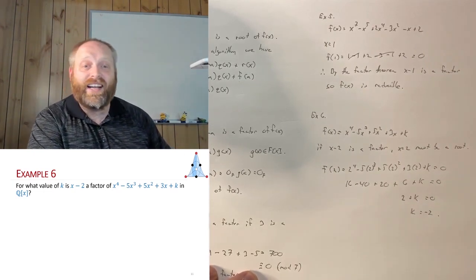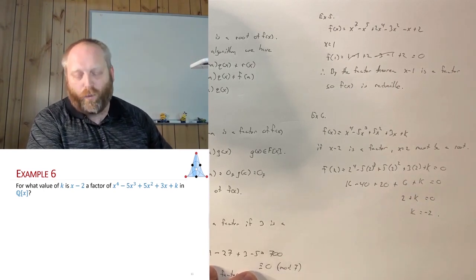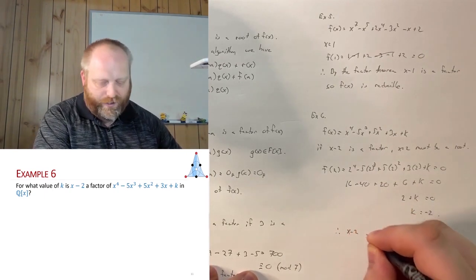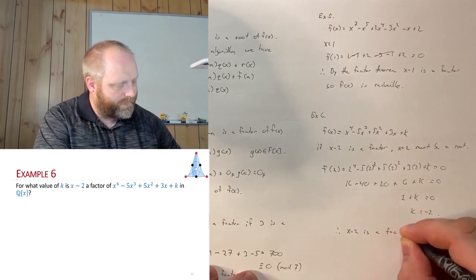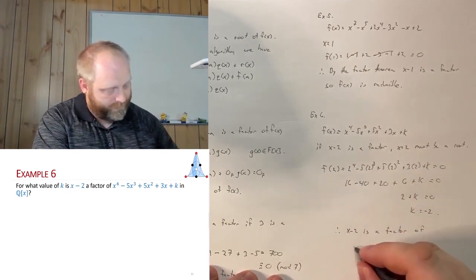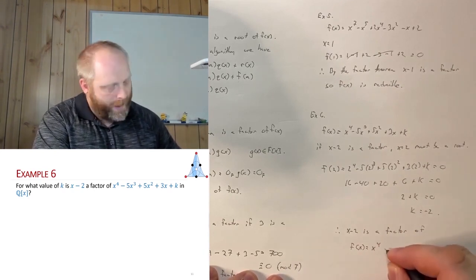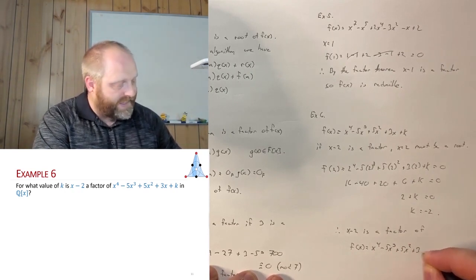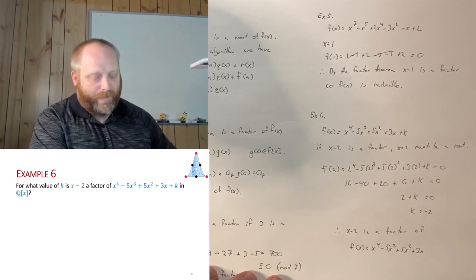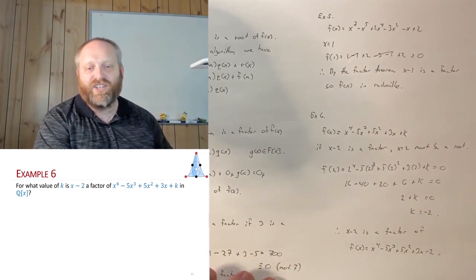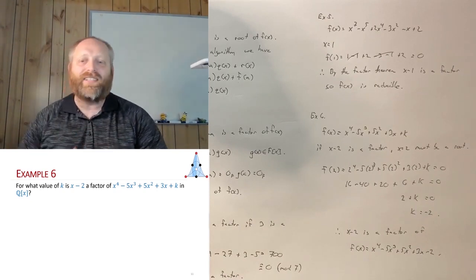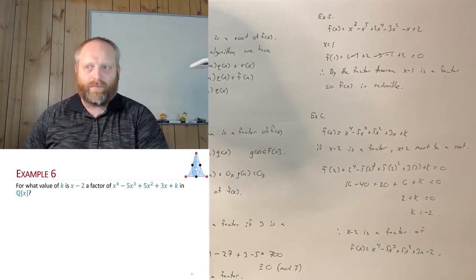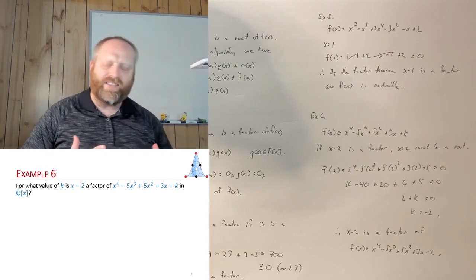When k = negative 2, f(2) = 0, which means x minus 2 is a factor of f(x) = x⁴ minus 5x³ plus 5x² plus 3x minus 2. All variations of these questions are really asking the same thing and are solved simply by applying the factor theorem.